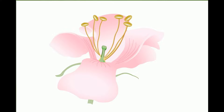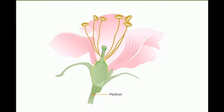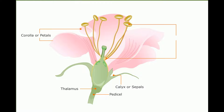The main parts of a flower are: the pedicel and thalamus; the leaf-like calyx or sepals; the attractively colored corolla or petals; the androecium or stamen; and the gynoecium or pistil. The flower is born on a stalk called the pedicel.